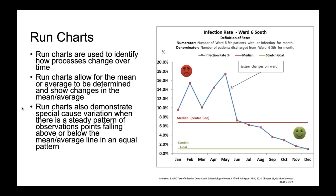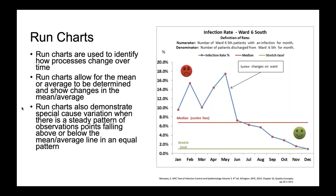Run charts are used to identify how processes change over time. Run charts allow for the mean or average to be determined and show changes in the mean. They also demonstrate special cause variation when there is a steady pattern of observation points failing above or below the mean or average line in an equal pattern. With affinity diagrams, you're gathering large amounts of language data and creatively grouping the data based on lines of natural relationships. Data are collected from brainstorming or customer service and then split up — for example, into quality, service, delivery, or price.